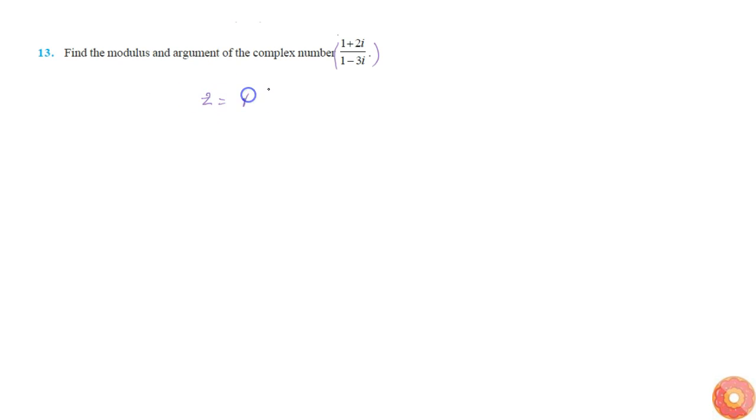If we write it in polar form, that is z equal to r cosθ plus i sinθ. Then if we can convert this into this form, then r is modulus and θ is the argument. So this is modulus and this is argument.